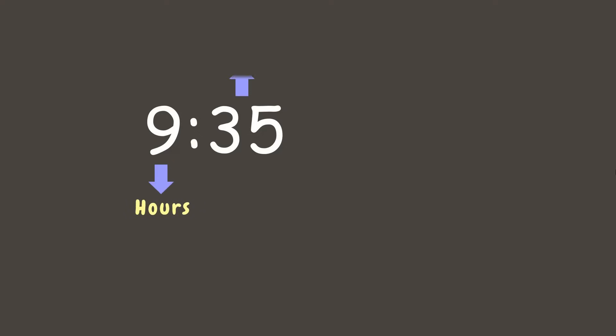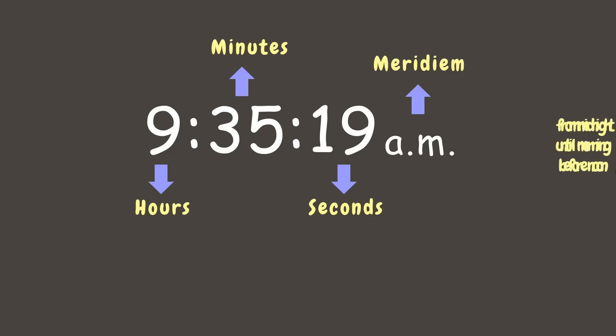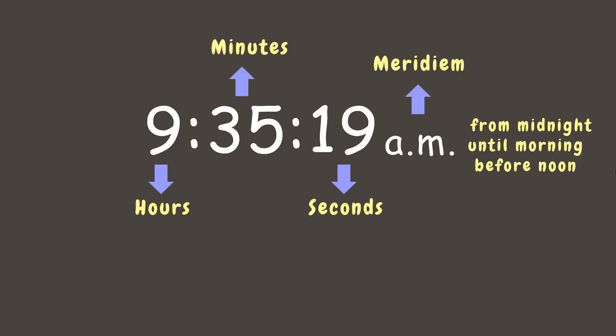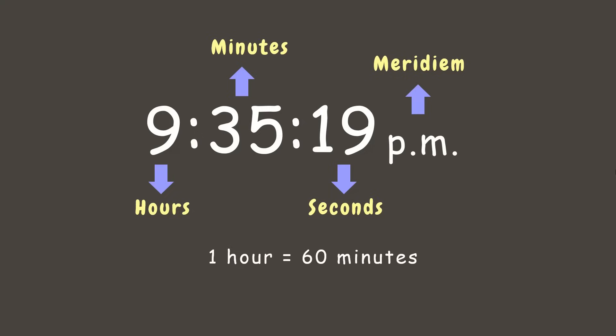Now let's have a quick review about time. In 9:35, the 9 represents the number of hours and 35 is the number of minutes. AM stands for ante meridiem, meaning from midnight until before noon, while PM stands for post meridiem, meaning afternoon until before midnight. Also remember: one hour equals 60 minutes, and one minute equals 60 seconds. We will use this later.